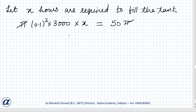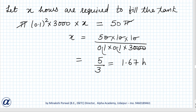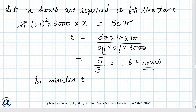Solving for x: x equals 50 divided by (0.1 into 0.1 into 3000). That is equal to 50 divided by (0.01 into 3000), which simplifies to 5 by 3, that is equal to 1.67 hours. Converting to minutes: 5 by 3 into 60 equals 100 minutes. So the answer is 100 minutes.